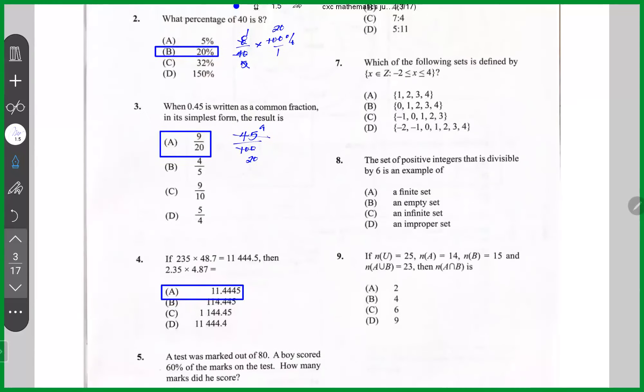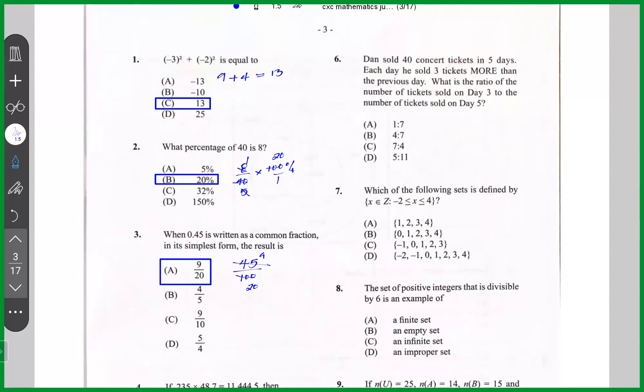Up now, back to number six. Number six says, Dan sold 40 concert tickets in five days. Each day he sold three tickets more than the previous day. What is the ratio? All right, so let's just say on day one he sold X. Day two would be X plus three. It's five days, so it's X plus X plus three. Day two, X plus six. Day three, X plus nine. Day four, X plus 12. Day five, and that's a total of 40.